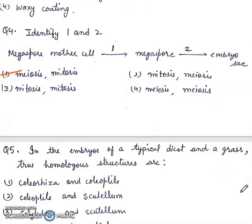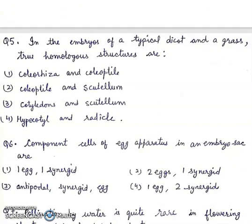Question 5. In the embryos of a typical dicot and grass, true homologous structures are: coleorrhiza and coleopatile, coleopatile and scutellum, cotyledons and scutellum, hypocotyl and radicle. Correct answer will be cotyledons and scutellum.